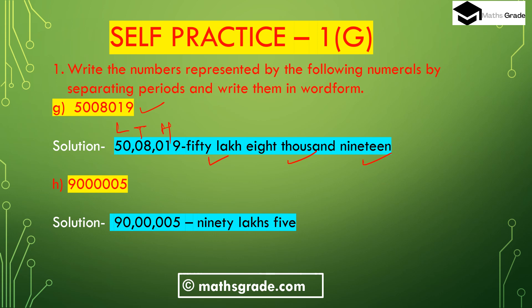Part (h): the number is 9000005. We have to write it using periods and in word form. In the Indian system of numeration, starting from the right we place 3 digits — 005 in the hundreds place — then 00 in the thousands place, then 90 in the lakh place. The number in word form is 90 lakh 5.